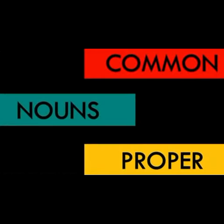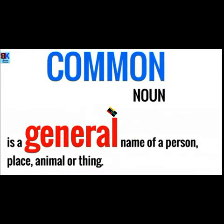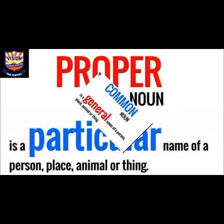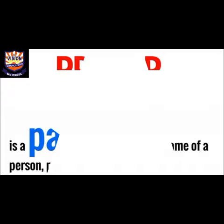Nouns are further divided into common noun and proper noun. A common noun is a general name of a person, place, animal, or thing. A proper noun is a particular name or a special name of a person, place, animal, or thing. Let's discuss some examples.